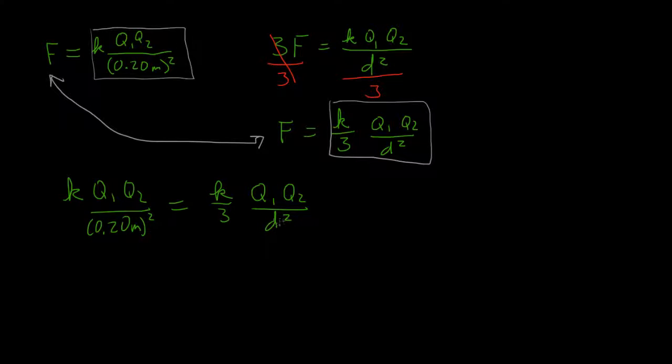And we need to solve for D squared. So the first thing I'm going to do is since the K Q1 and Q2, these are all equal, I'm going to divide both sides by K Q1 Q2.